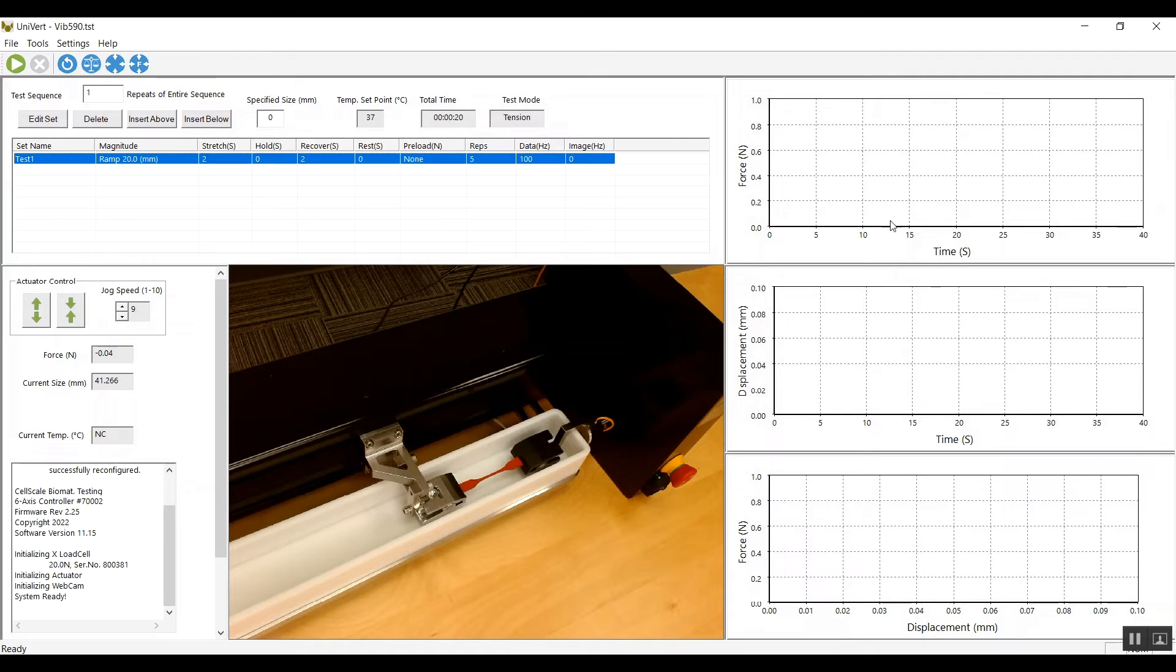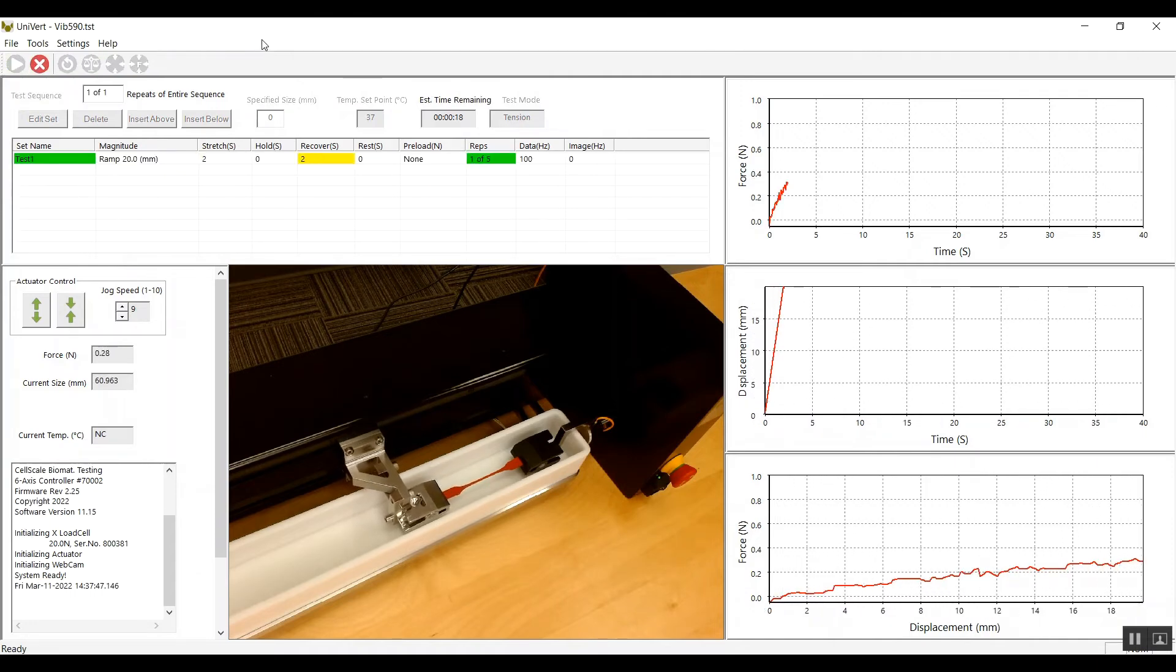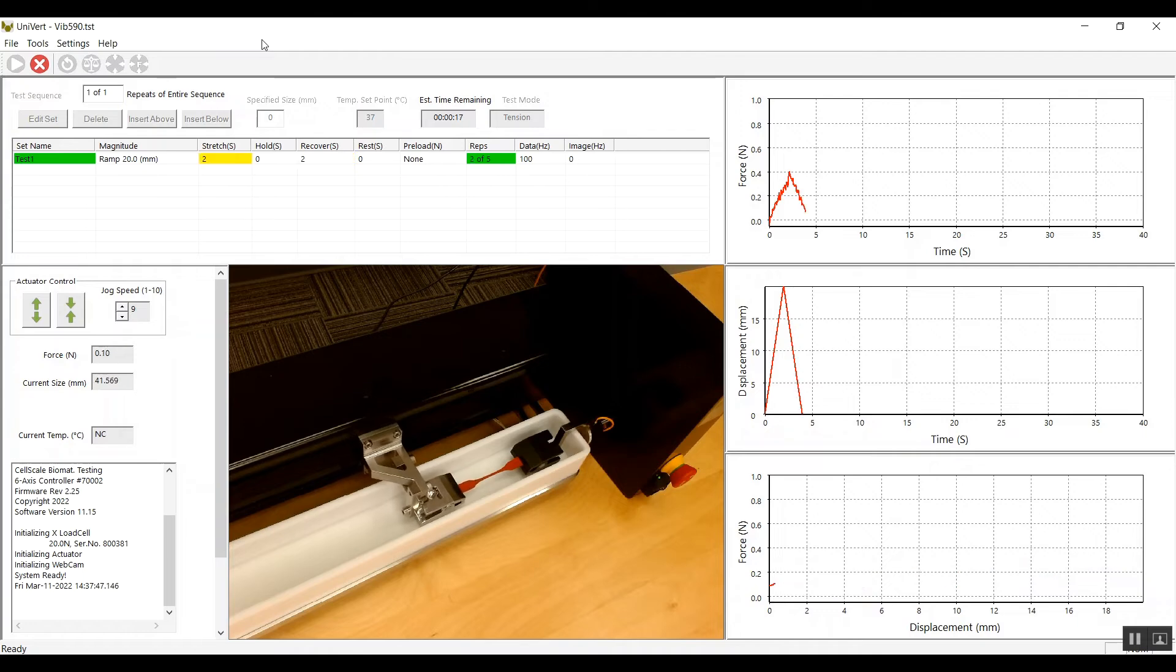On the right you'll see the force versus time, displacement versus time, and force versus displacement graphs. In the center portion you'll see the webcam showing me what's happening. I'm going to start the test now and there you can see it running and you see the live data populating the graphs as we go. This data will also be written to a text file that I can open for further analysis.